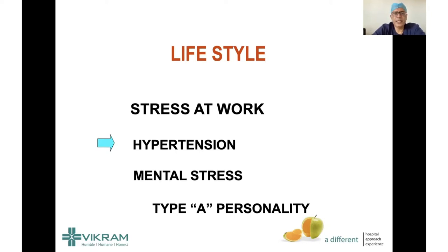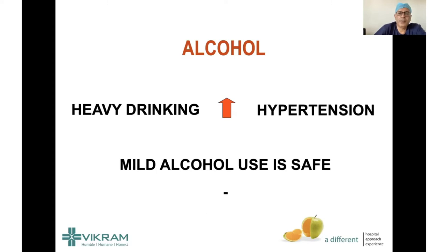Stress at work increases blood pressure; mental stress leads to more bad hormone production and puts stress on the heart, and can precipitate unstable situations like angina, rhythm disturbances, stroke, and heart attack. Alcohol is another consideration — mild alcohol use in moderation is safe, but heavy or frequent drinking can cause increased hypertension, impaired clotting ability, bleeding problems, fatty liver, and other trouble.